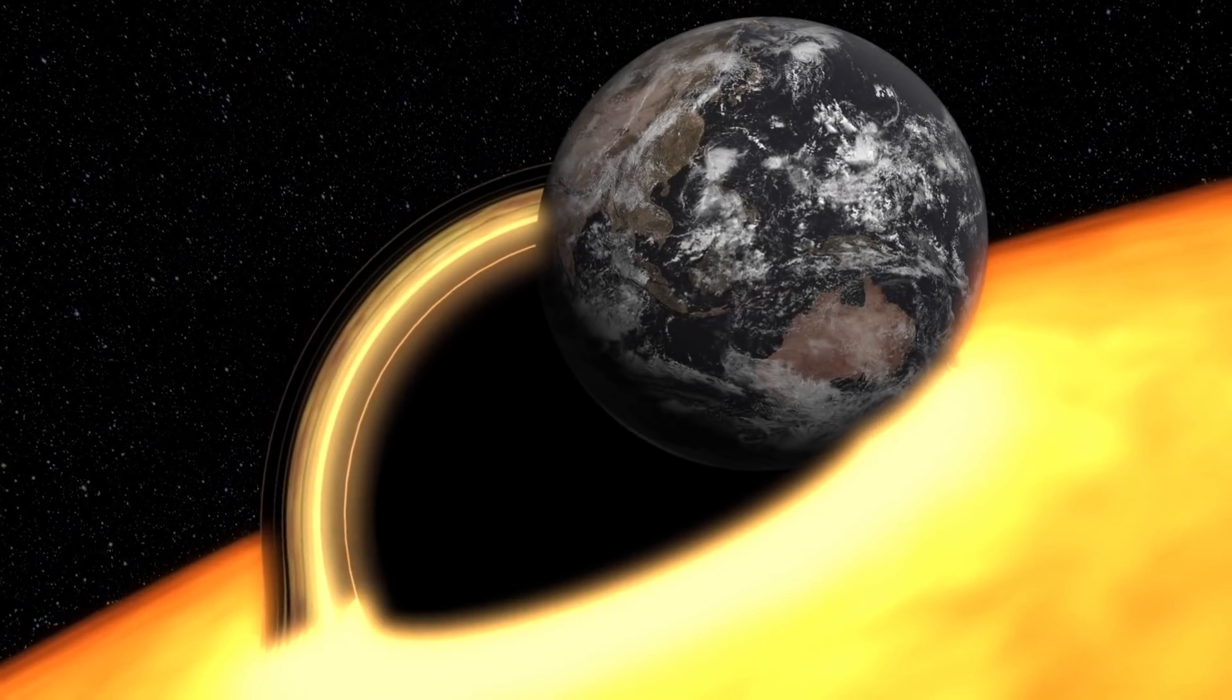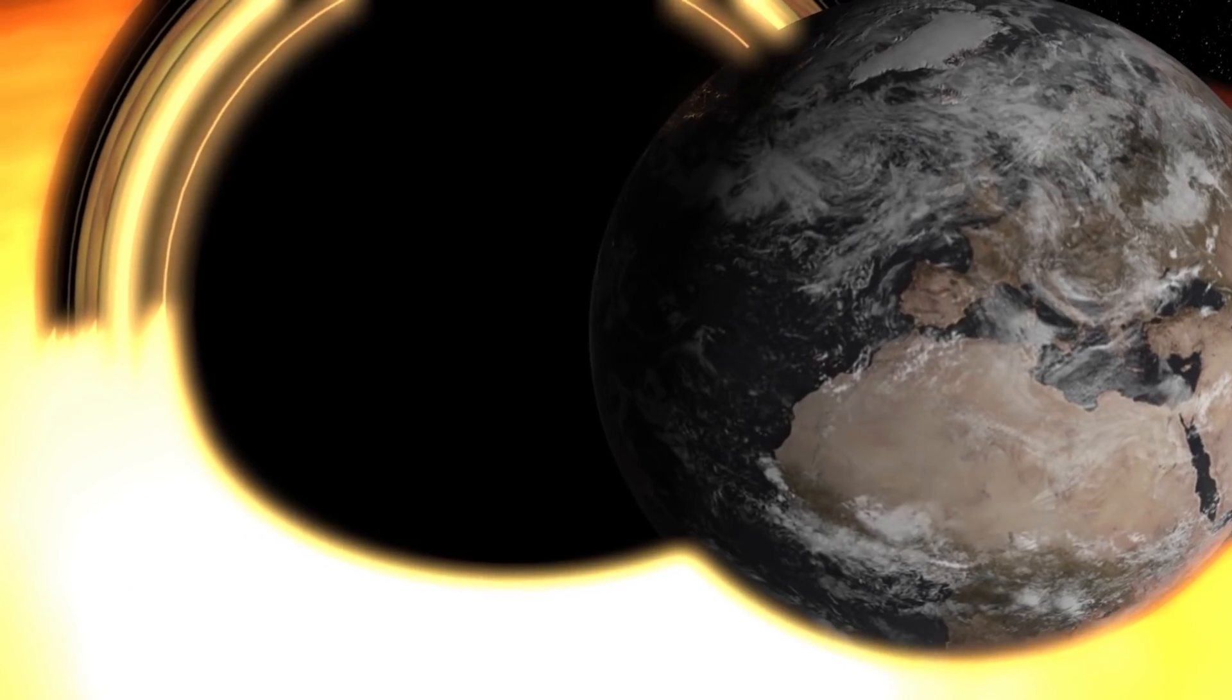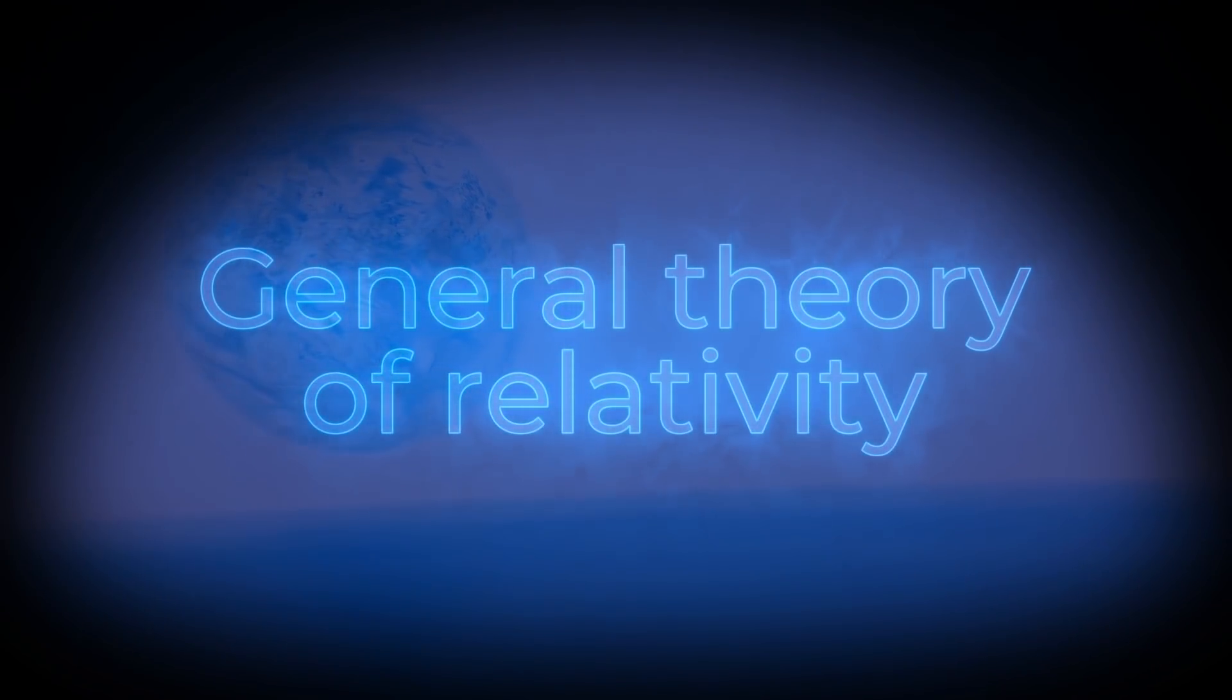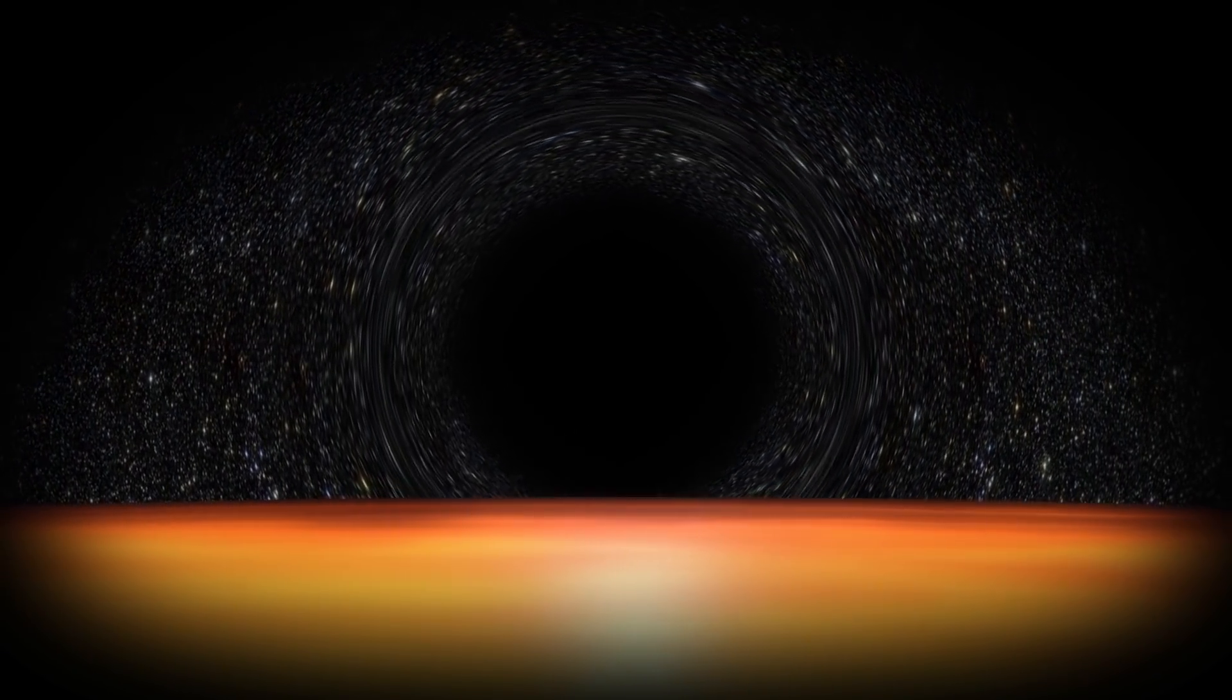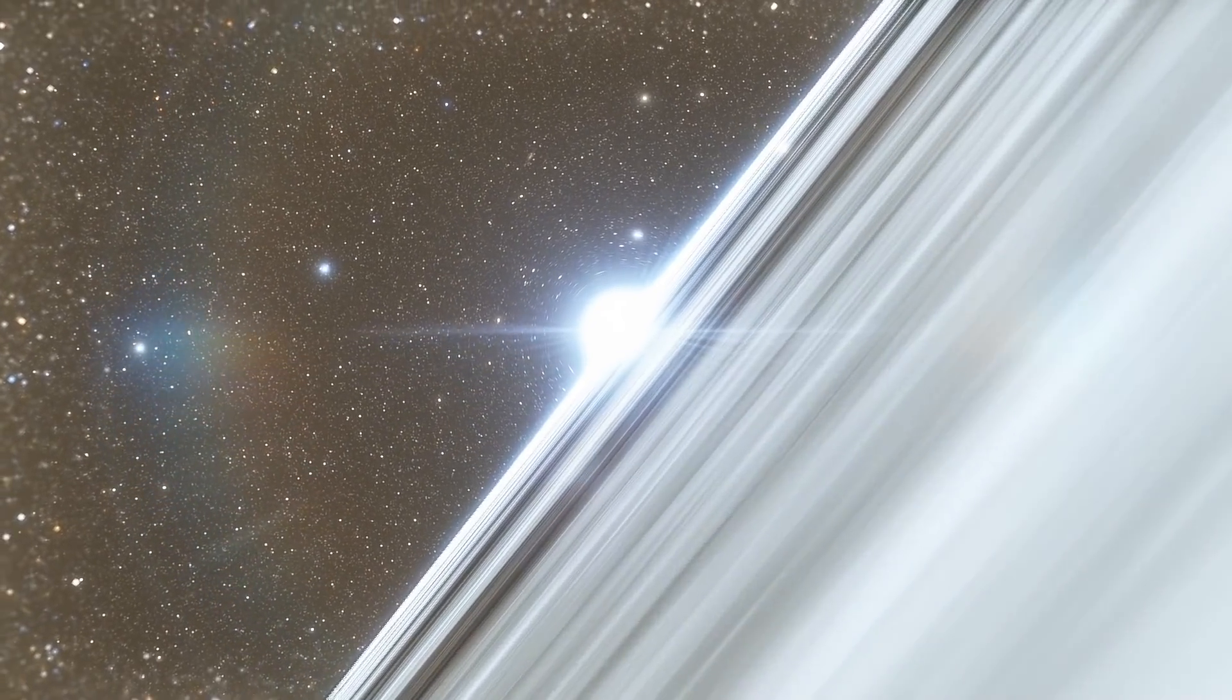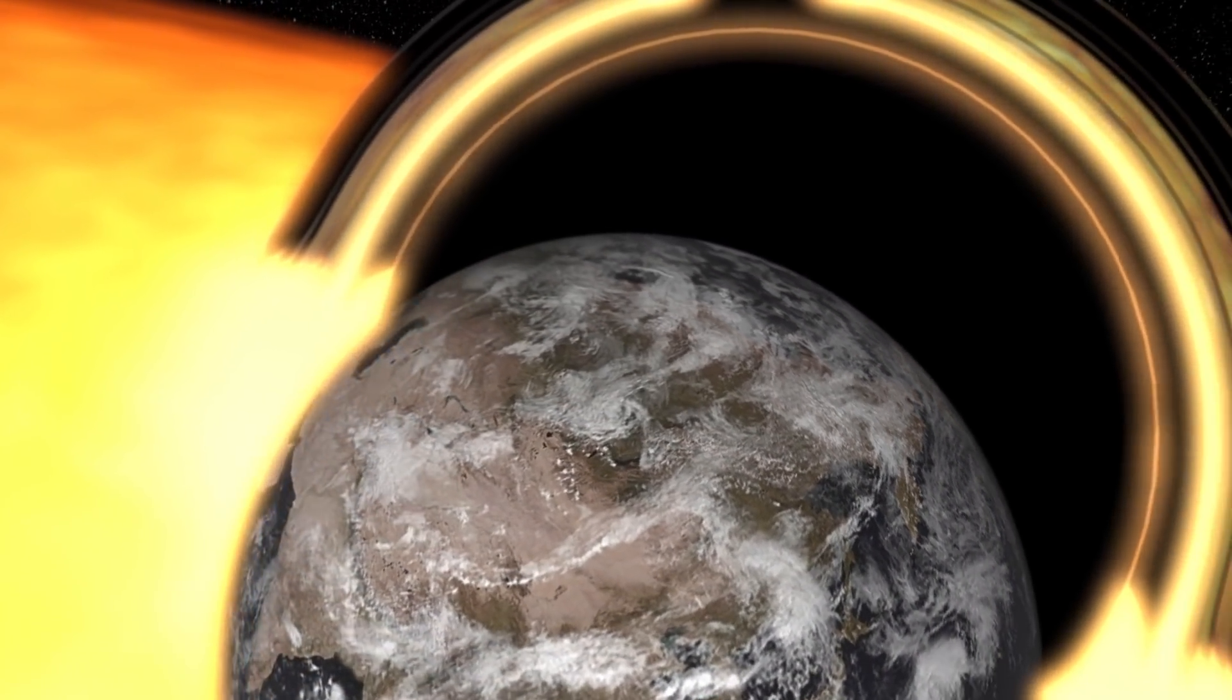What would happen to you personally if you somehow survived all the cataclysms and together with the planet found yourself drawn into a black hole? Nothing good, of course. What we know about the interior of black holes comes from Albert Einstein's general theory of relativity. Beyond the event horizon, all laws of physics cease to exist. Space and time are no longer interconnected realities inside a black hole—they merge, losing their independence. Scientific publicist Amanda Gefter writes that the moment you reach the event horizon, you seem to freeze in one place. So it would seem to any outside observer.